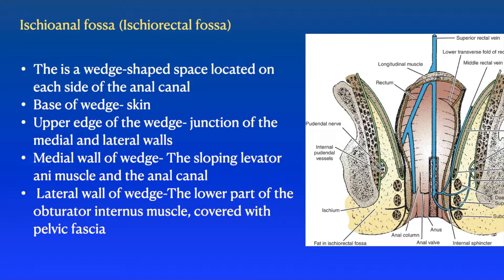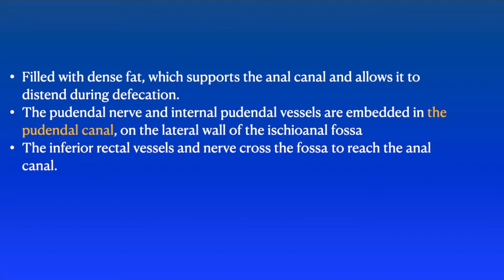The ischiorectal fossa is a wedge-shaped space located on each side of the anal canal. The base of the wedge is the skin. The upper edge of the wedge is the junction of the medial and lateral walls. The medial wall is the sloping levator ani muscle and the anal canal, and the lateral wall is the lower part of the obturator internus muscle covered with the pelvic fascia. It is filled with dense fat and supports the anal canal, allowing it to distend during defecation.